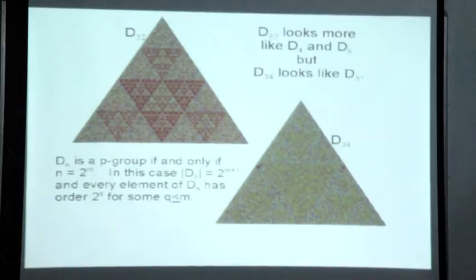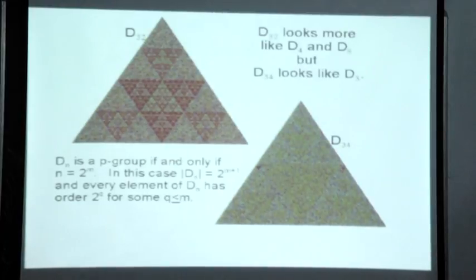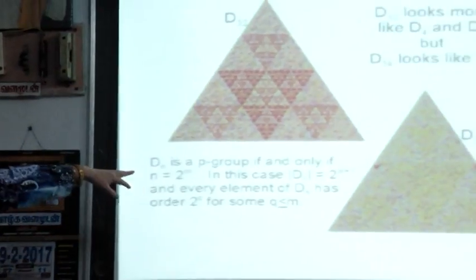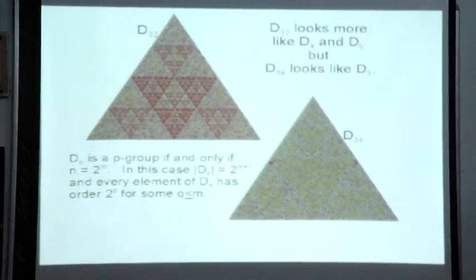But look at D34. It turns out there's something called a p-group. Dn is a p-group if and only if n is a power of 2. A p-group is a group whose order is a prime power. If we have a p-group and the size of the group is a power of 2, then every element has order 2 to some power less than m.